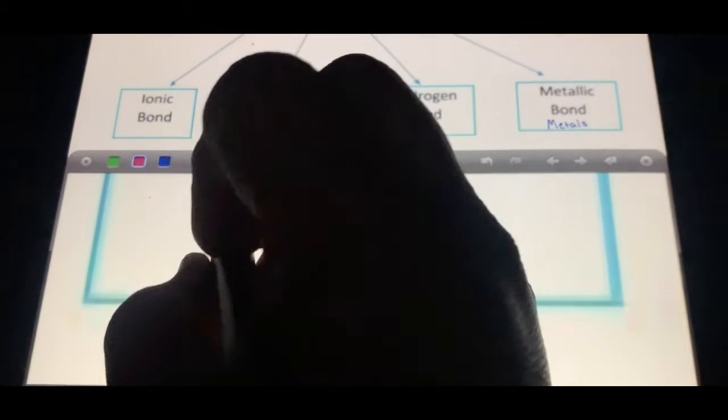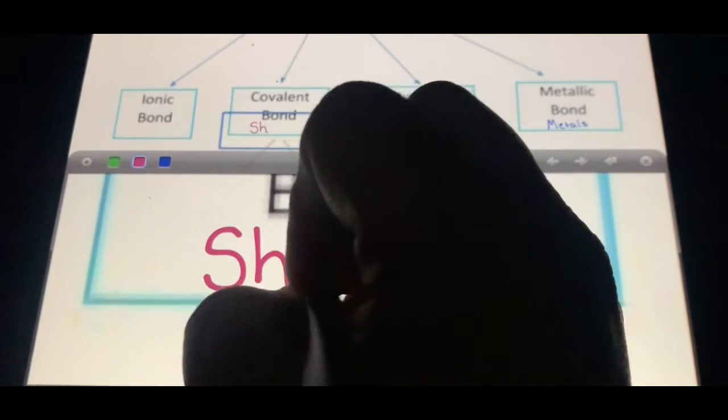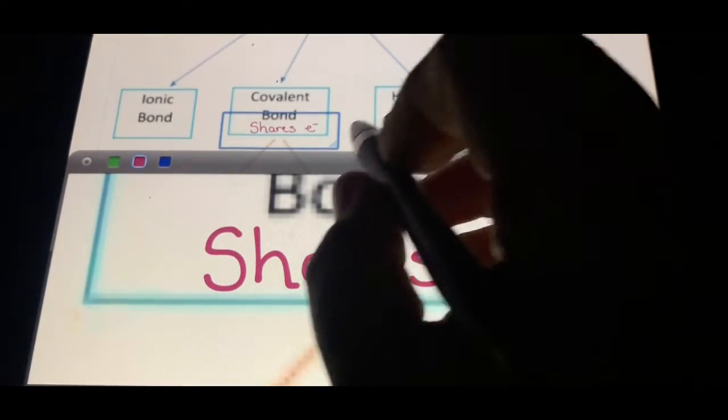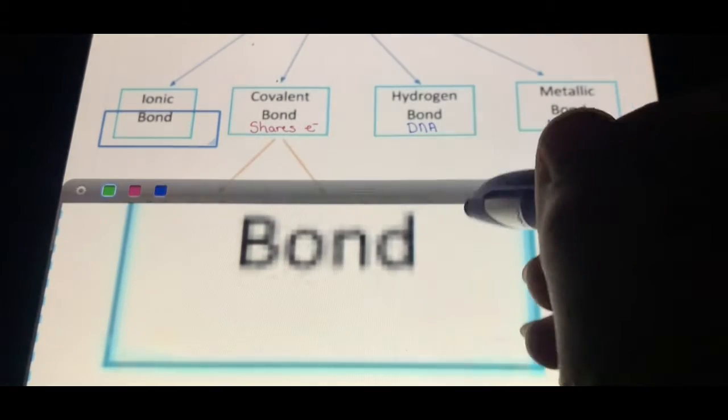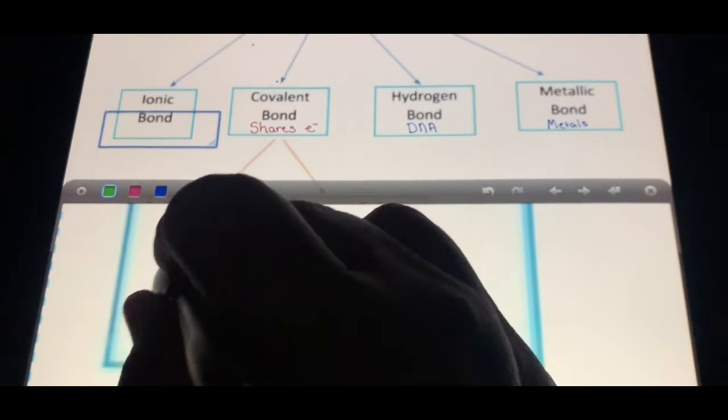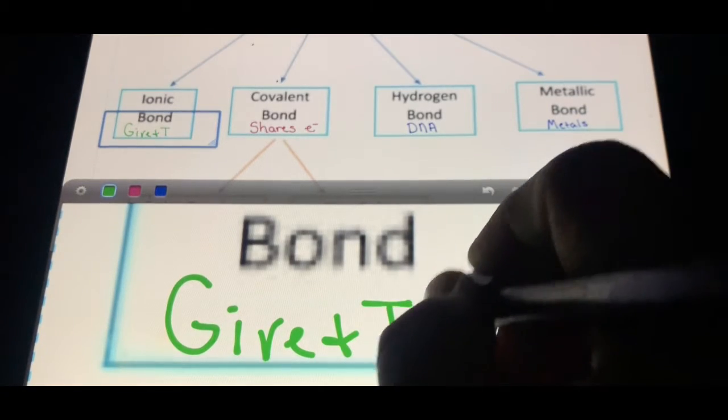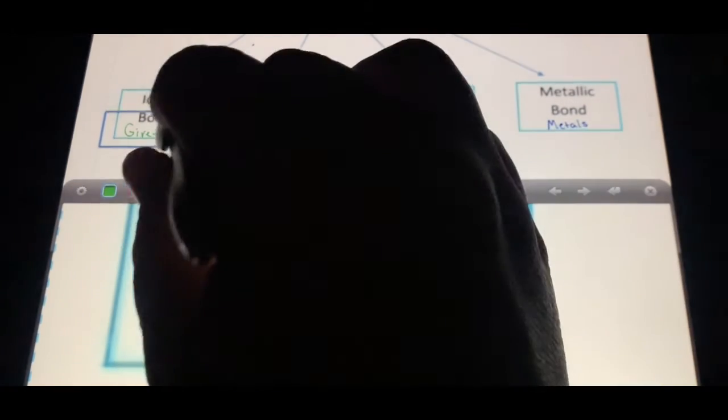When you think of the word covalent, I want you to think of shares electrons. When you think about ionic bonds, I want you to think of give and take, and cations and anions.